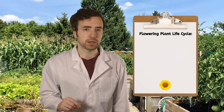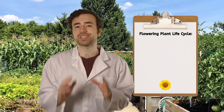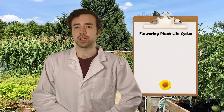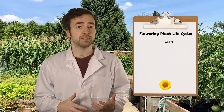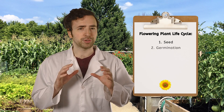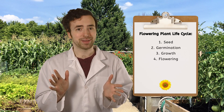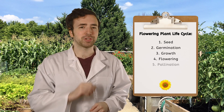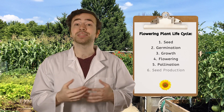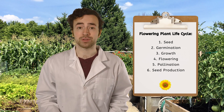So, flowering plants have six stages of their life cycle. Now that we've seen how a flowering plant lives out most of its life cycle, let's go see how some non-flowering plants grow.